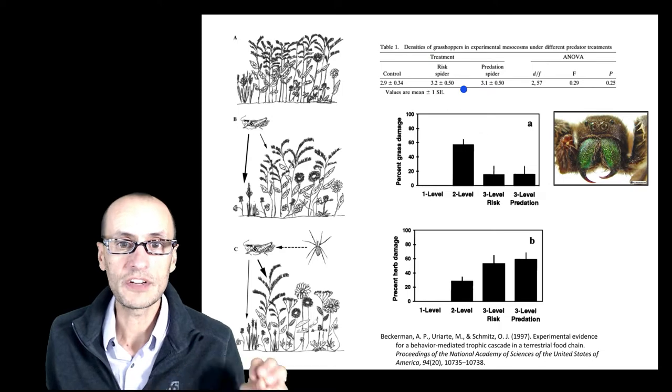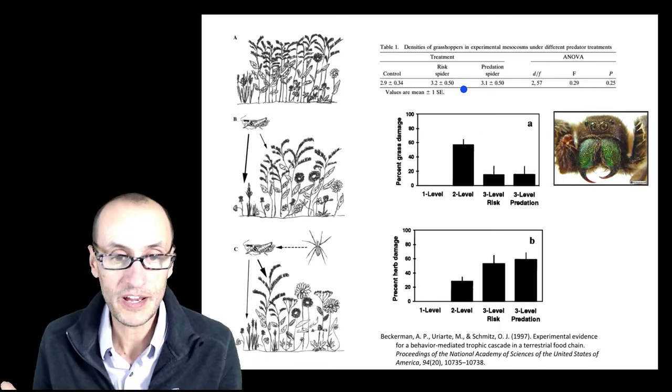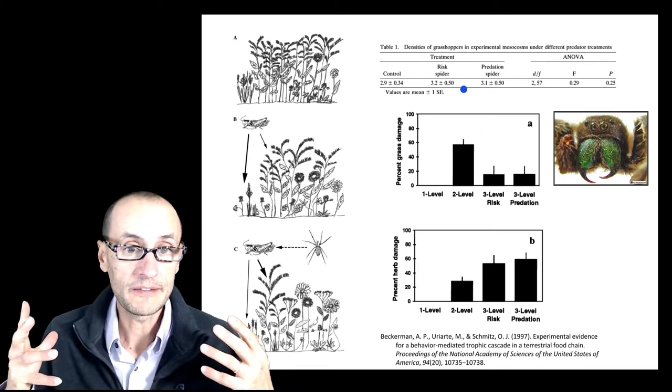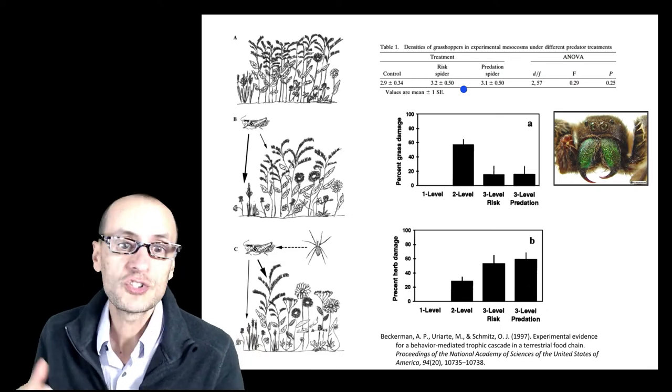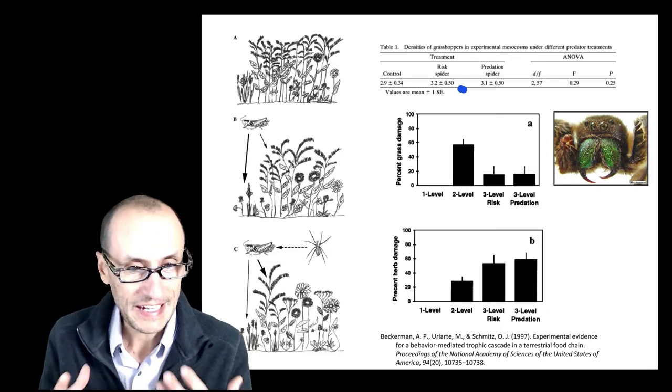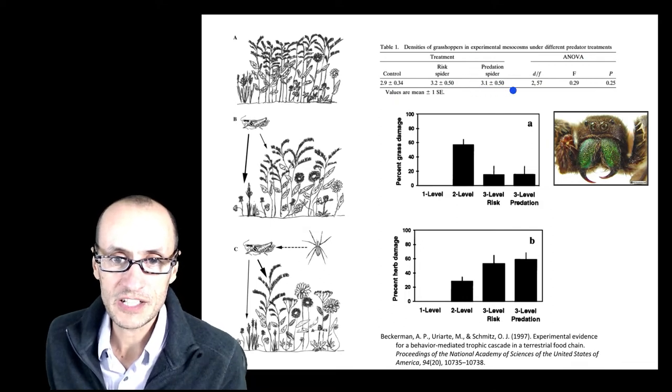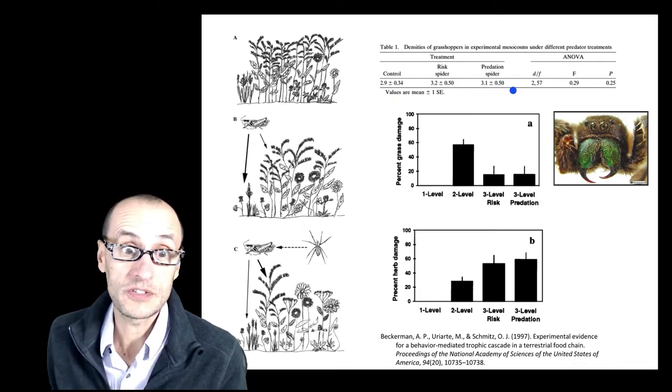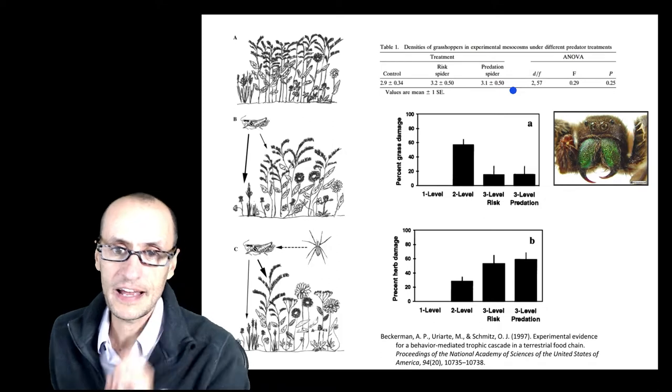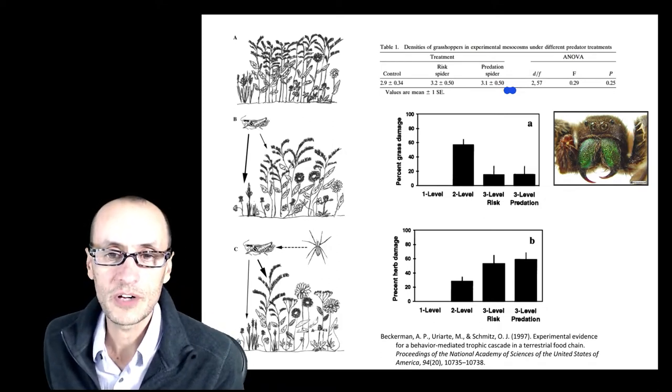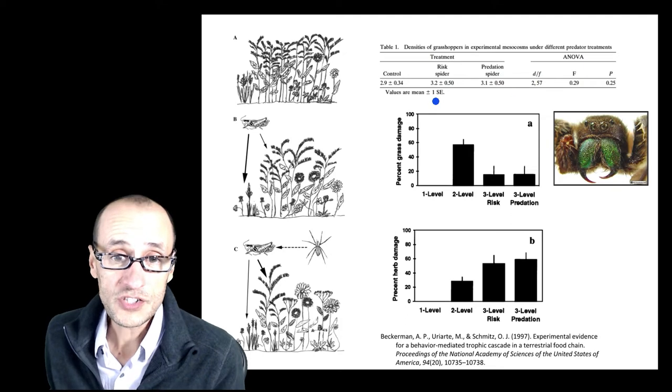That is, the spiders that only could have an effect on the system by being there and providing a cue of risk to the herbivores but can't actually eat them were equally abundant at the end of the experiment as the predation spiders. These are the spiders that could actually go out and actually feed on the herbivores.